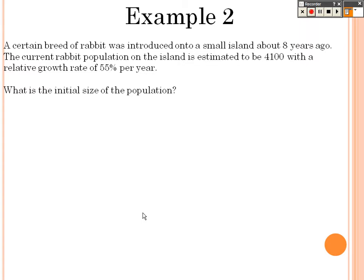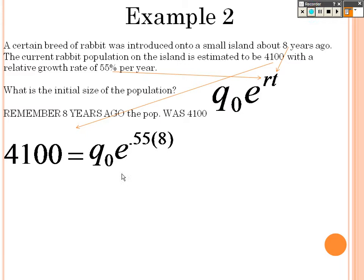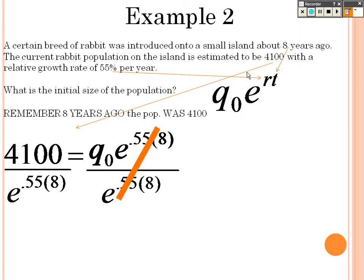In example 2, a certain breed of rabbit was introduced onto a small island about 8 years ago. The current rabbit population on the island is estimated to be 4,100 with a relative growth rate of 55% per year. What is the initial size? We want to figure out what did it start at. So we start with a population at 4,100 and it grows at 0.55 for 8 years. That's what our answer is, 4,100 is what it is now. We want to know what we started with. So E to the 0.55 times 8 is what I'm going to divide both sides by to figure out what we initially started with. There's about 50 rabbits.